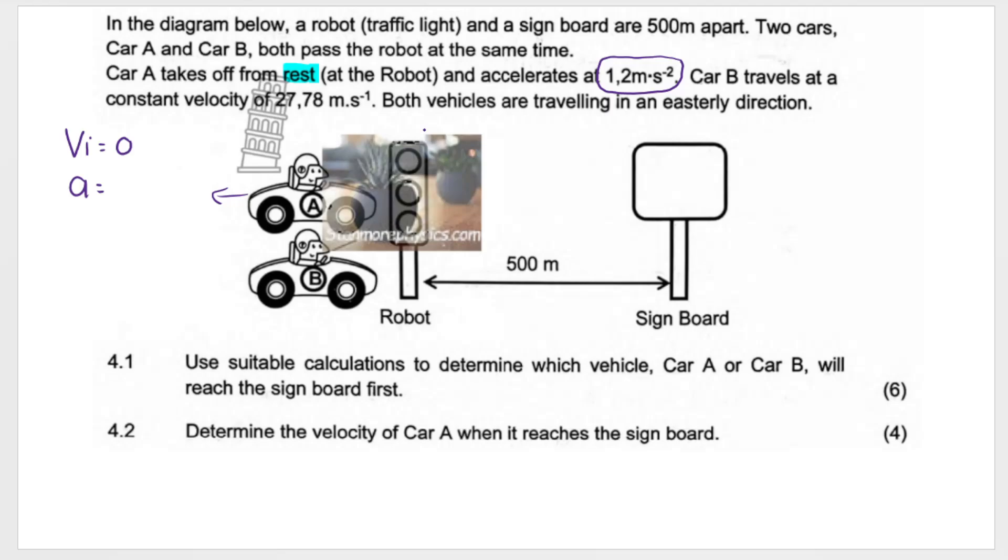Okay, so we are saying that this car is going to travel to the right, towards the signboard. Let's take that direction, or east. Here they speak about an easterly direction, that's my positive direction, east. And the car is accelerating, it's speeding up in the positive direction, so acceleration is positive.